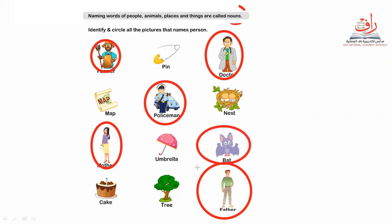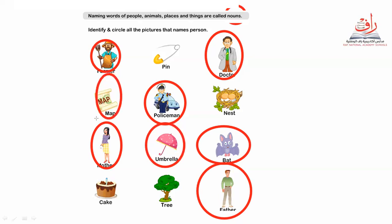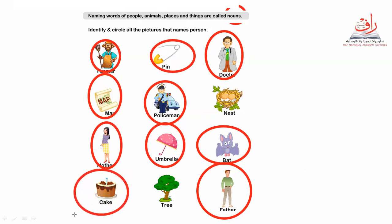Umbrella — no. Bat — no. Father — yes. Tree and cake — those are things. Now let's circle the animals. Bat — is it animal or thing? And the last category is for things: umbrella, map, pen, cake, tree — so that's all nouns. Let's go next.